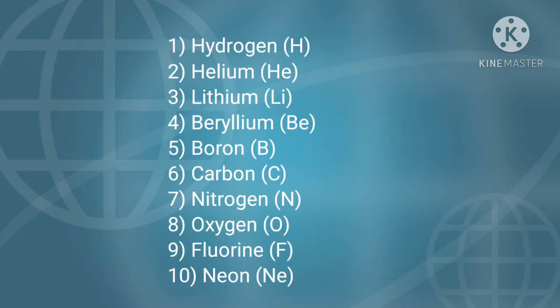Dear viewers, these are the elements in order from 1 to 30. The chemical symbols of these elements are found in parenthesis. Element number 1, hydrogen; number 2, helium; number 3, lithium; number 4, beryllium; number 5, boron; number 6, carbon; number 7, nitrogen; number 8, oxygen; number 9, fluorine; number 10, neon.